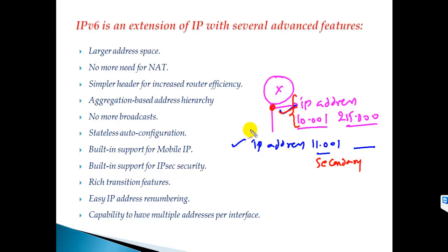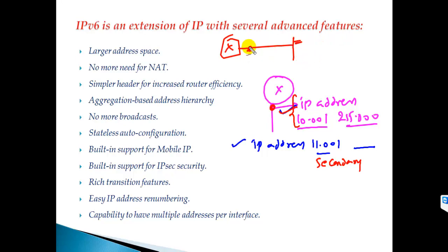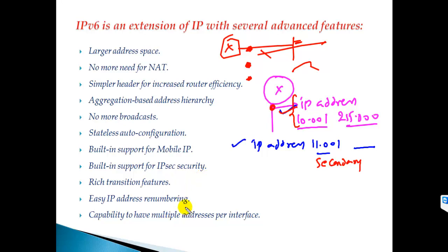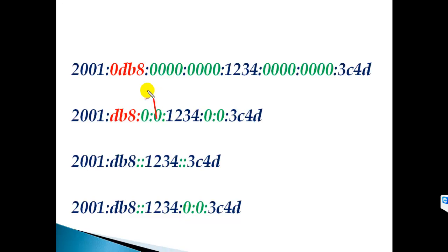In IPv6, on a single interface, you can assign multiple IPv6 addresses natively — for example, a private IPv6 address for LAN communication within your company and a public IPv6 address on the same interface. If traffic comes from one network, it uses the private IP; it depends on the source. I'll demonstrate how to assign IPv6 addresses when we get into the practical labs.